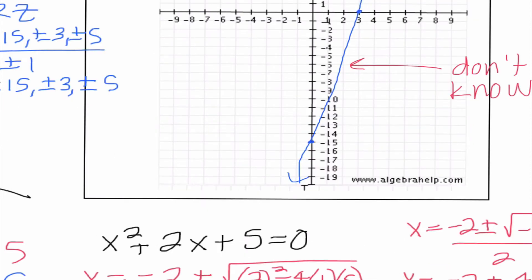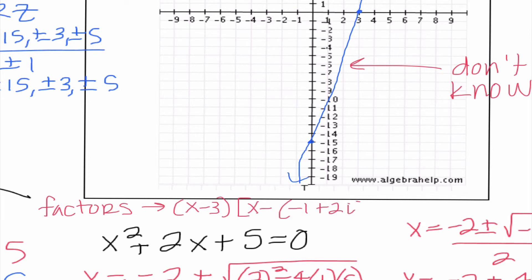The final thing I want to do is write out the factors. In your homework tonight, it's going to ask you to do this. Our factors would be x minus 3, x minus negative 1 plus 2i, and x minus negative 1 minus 2i. Remember, it's always x minus whatever our zero is.